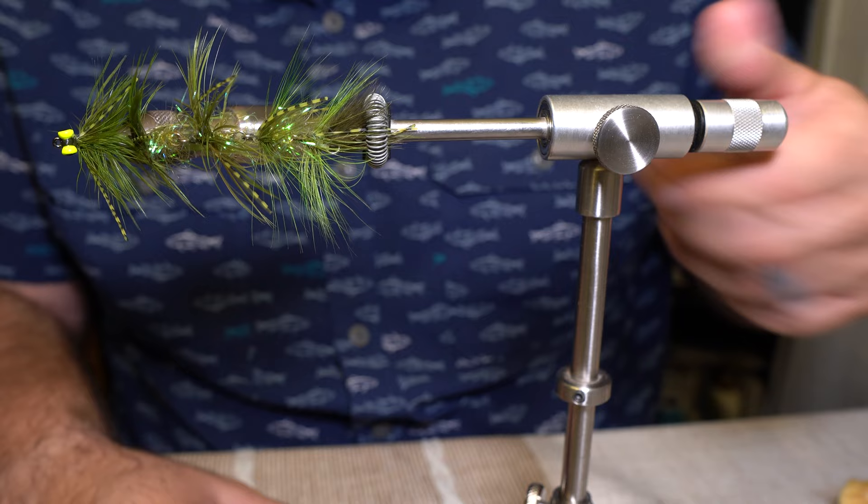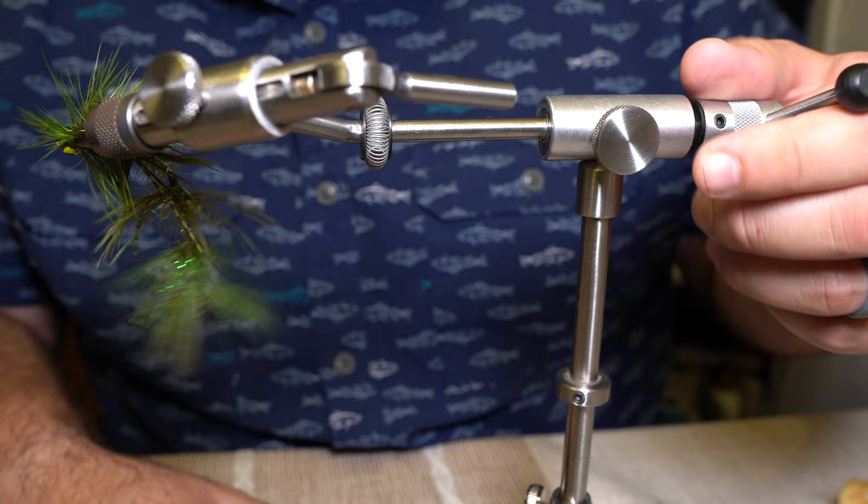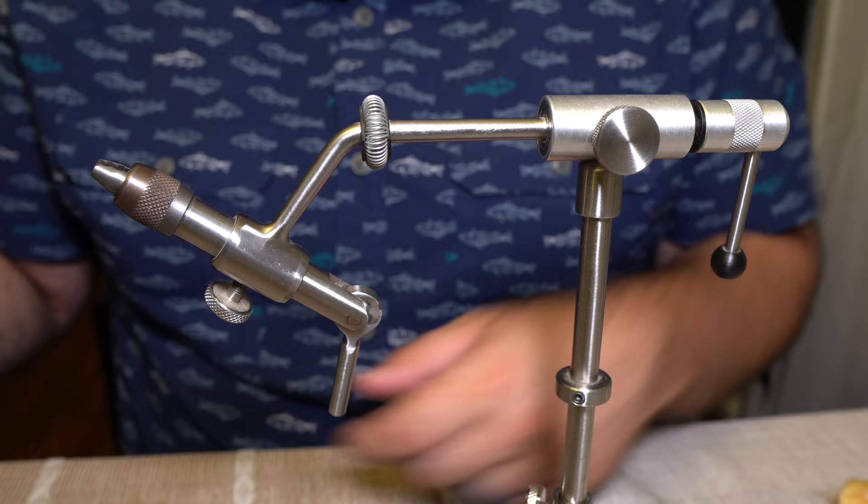Especially when you're working on something like the articulated fly and you're rotating it and it's just flopping all over the place. But that's neither here nor there. I'm sure I can slip a spring over there, that would not be hard to do.